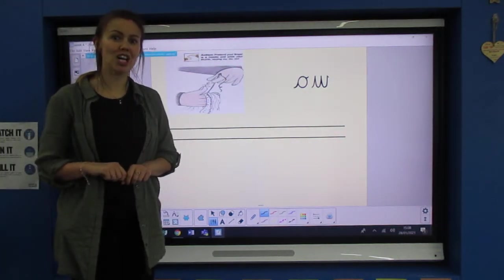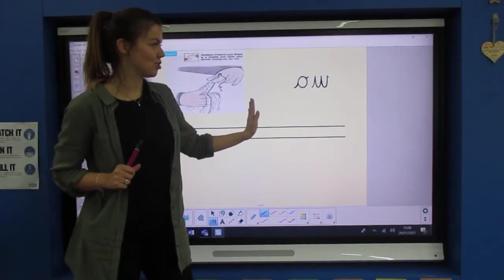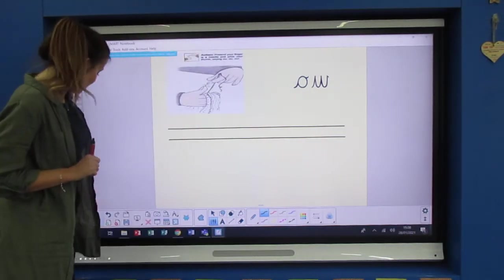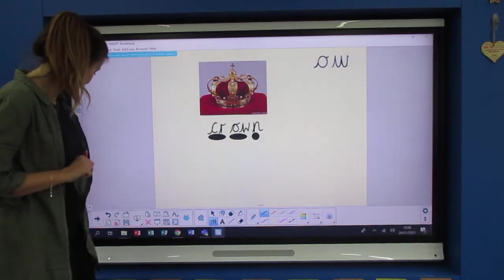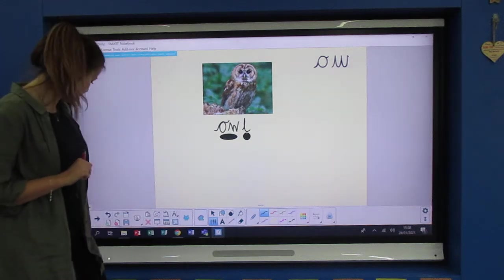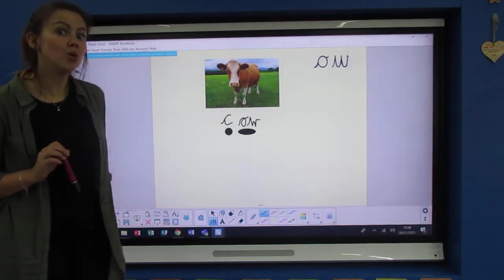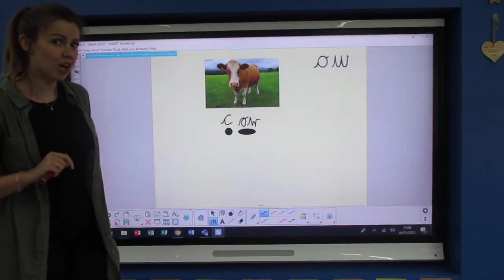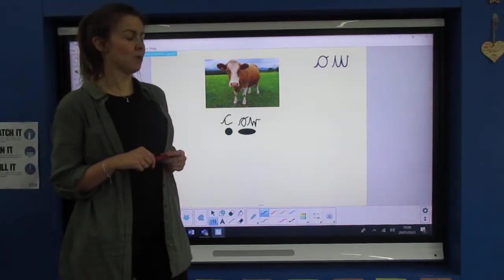To finish off, you're going to write and add one of your ow words into a sentence to apply what you've just learned into your sentence work. So you could use one of my words, the clown, the crown, the owl, or the cow. Or you could think of some of your own and write me your own sentence. I'm going to write one about the cow.